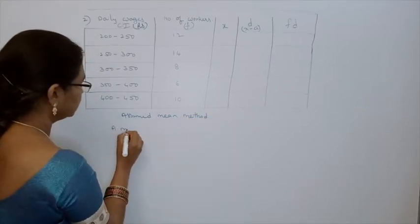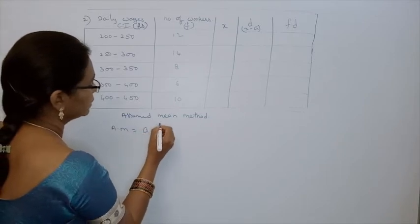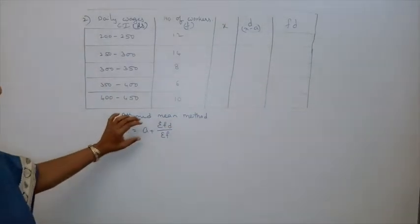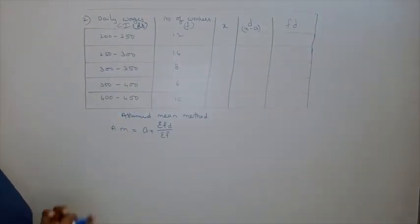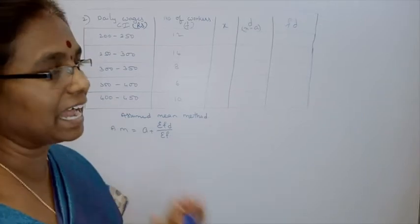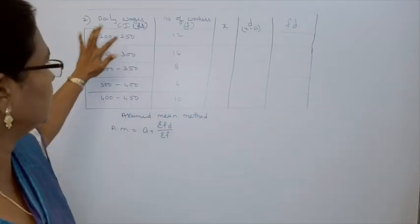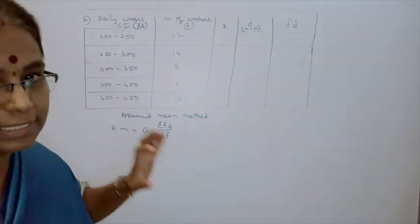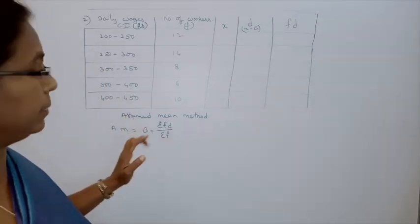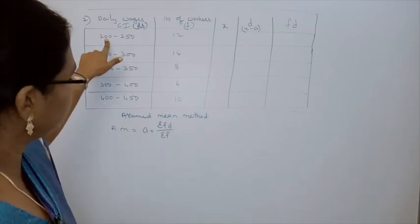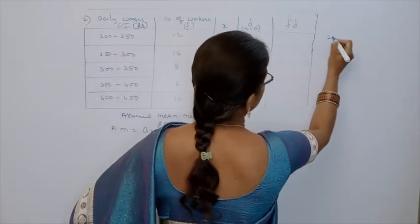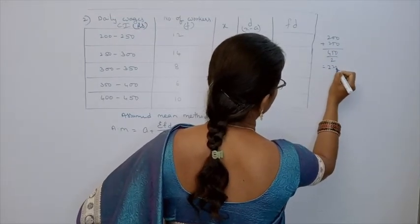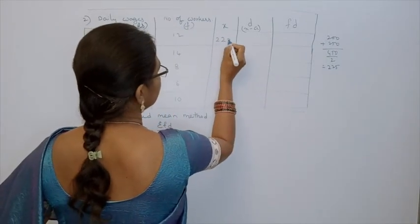What is the formula for assumed mean method? Arithmetic mean X̄ = A + (ΣFD / ΣF). First, we have to take the assumed mean. For that, first we have to find out the class mark. What are the class intervals here? 200 to 250, 250 to 300, 300 to 350, 350 to 400, 400 to 450. The class mark is the middle value — that means the average of the upper boundary and lower boundary. So 200 + 250 = 450, divided by 2 = 225. The class mark X = 225.